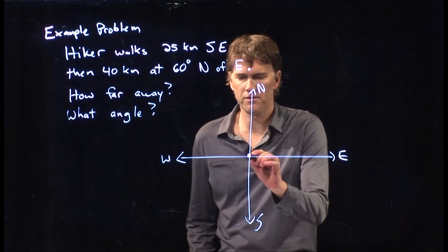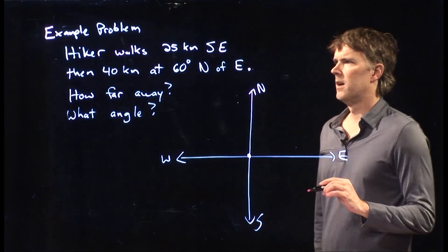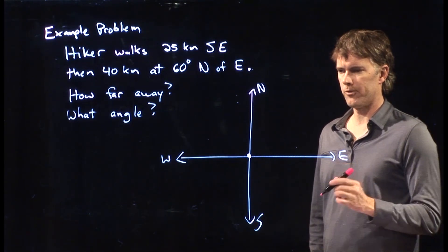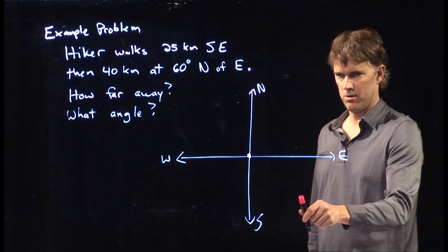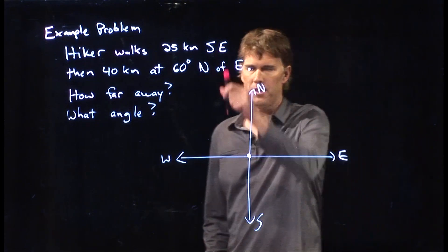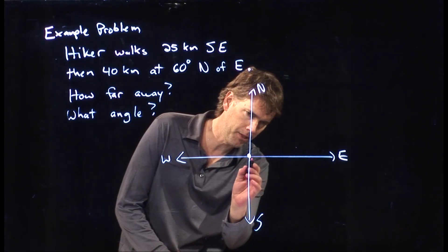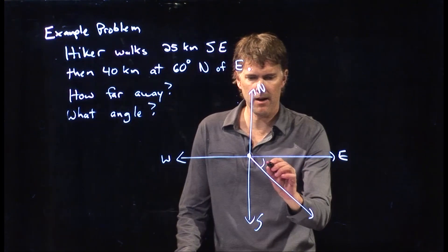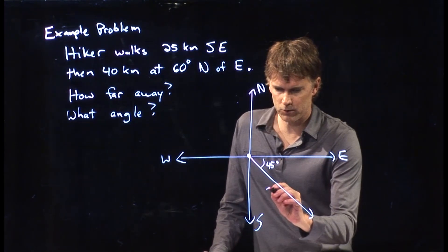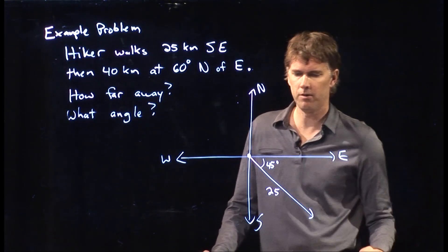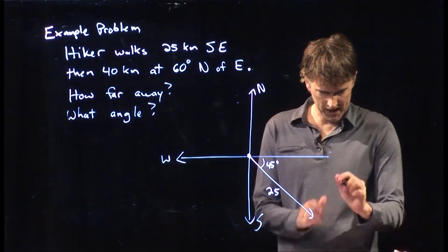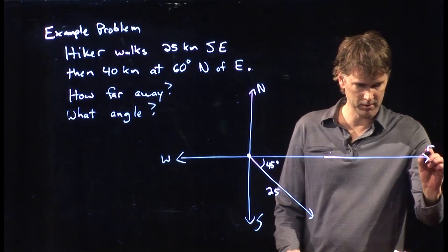The hiker starts right there at the origin. He's going to walk 25 kilometers southeast. So which quadrant is that? Quadrant four. Southeast means exactly between south and east — this angle right there is 45 degrees. And we know how long they walked: 25 kilometers, so the length of that arrow is 25 kilometers.